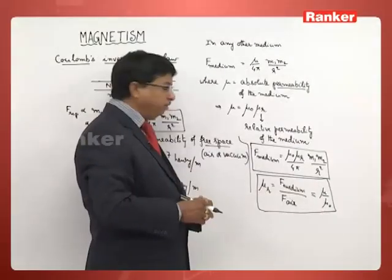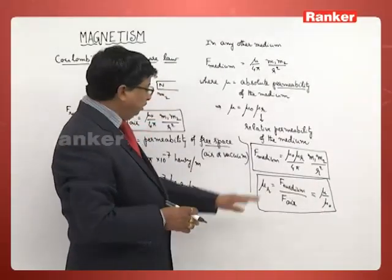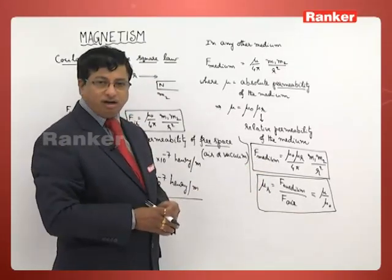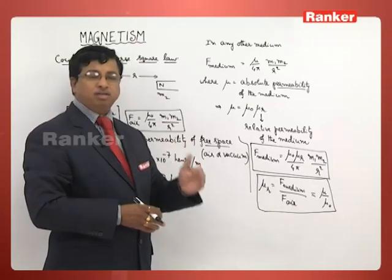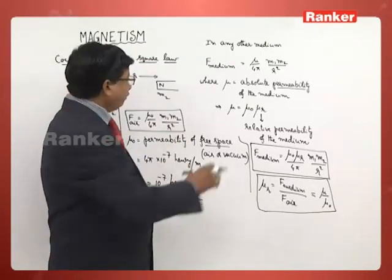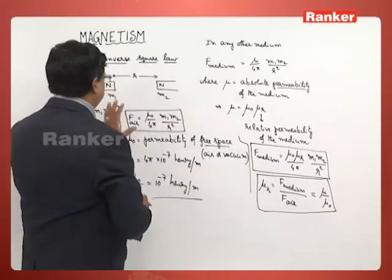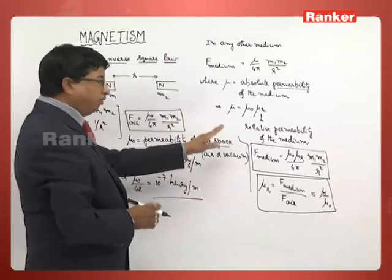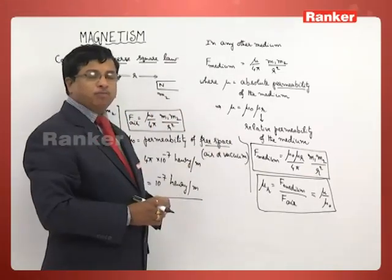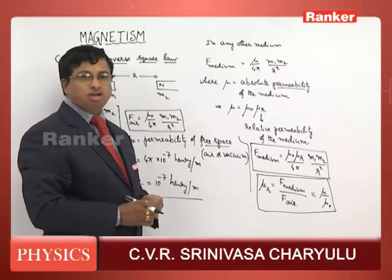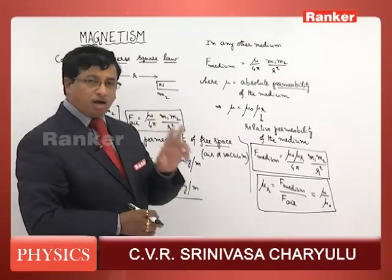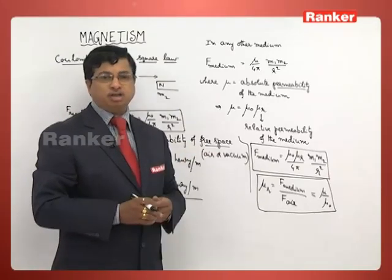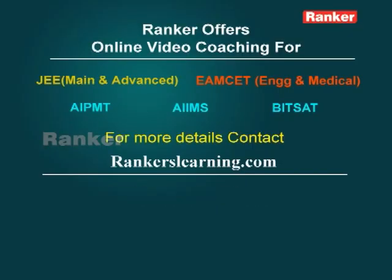What one should understand is that F_medium will truly be greater than F_air. This is the concept of Coulomb's inverse square law, which gives us the idea about the force of interaction between two magnetic poles when they are separated by a certain distance.